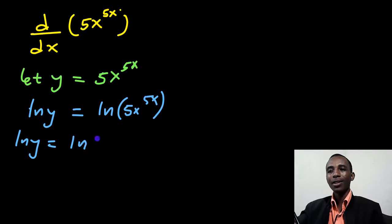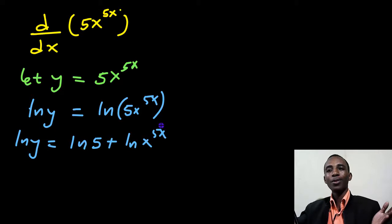This is going to be the natural log of 5 plus the natural log of x to the power of 5x, from the fundamental laws of logarithms. If I combine this, if there is addition, then I will just multiply these two and I will get back to this. So let's take derivatives now.